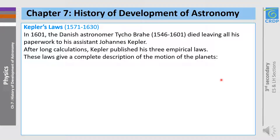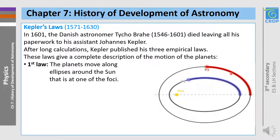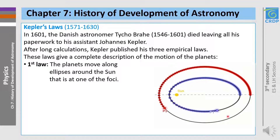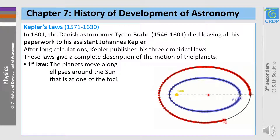Let's talk about three of the most important laws in the history of astronomy: Kepler's laws. In 1601, the Danish astronomer Tycho Brahe died leaving all his paperwork to his assistant, Johannes Kepler. And after long calculations and research, Kepler published his three empirical laws. These laws give a complete description of the motion of the planets. First, the planets move along ellipses around the sun that is at one of the foci. For an ellipse, we have two foci, and the sun occupies one of these foci.